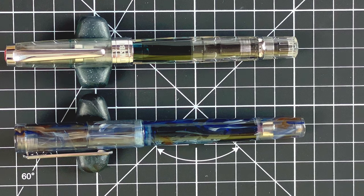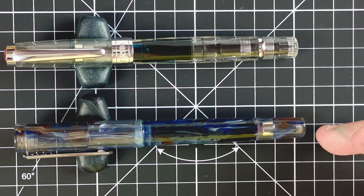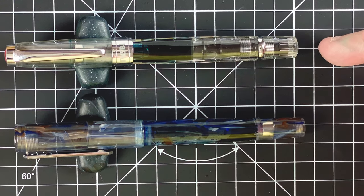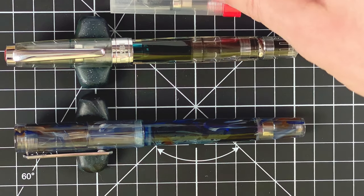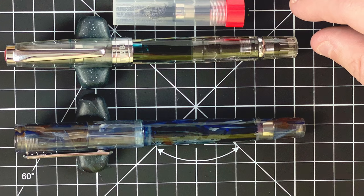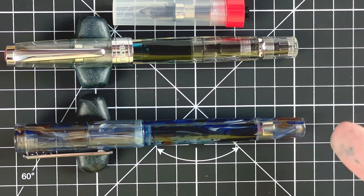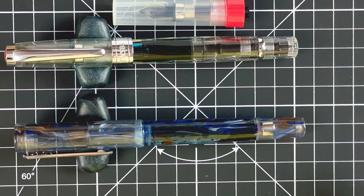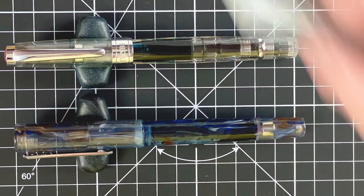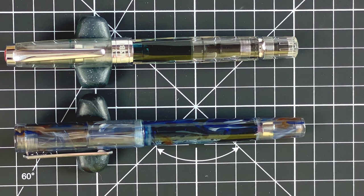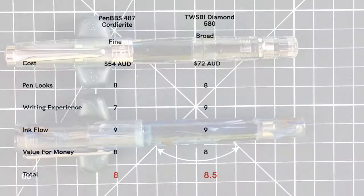Value for money. This is the interesting score. This one here, the Corduroyte, the PenBBS. That cost me $54 Australian. The Twisby, Diamond 580, this one was $72 Australian. As I said, I bought an additional nib unit for it, which was $33 Australian. But that means I've got two nibs in this pen for about $100. Whereas if I wanted a different size nib for this one, you can't get them. So I'd have to buy it from another company. Then I'd have to buy another pen. So you're talking the same price. They both write beautifully. As I said, they both look all right. So value for money. I'm struggling with this one. And I've got to be honest, I can't differentiate value for money wise between the two of them. So I'm going to give them both an 8 out of 10.